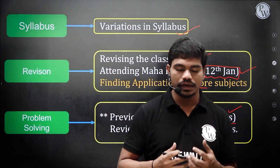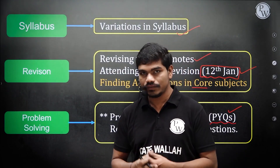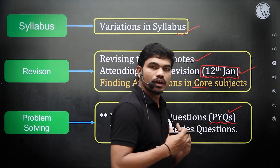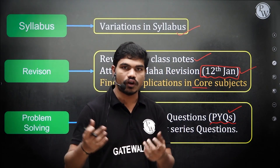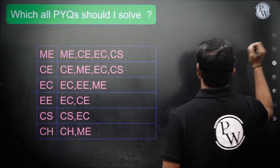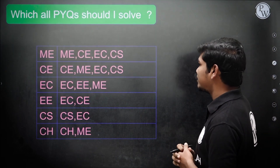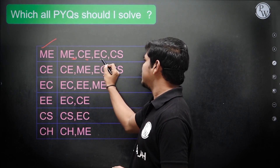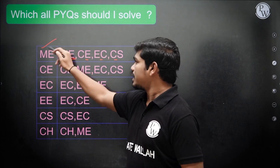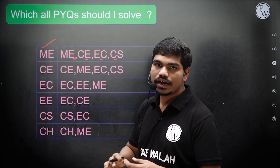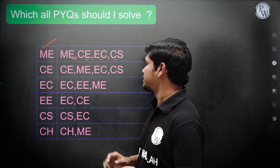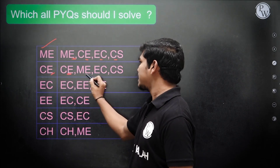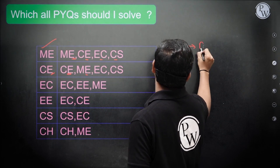There's a common question: since maths is common across branches, which PYQs should you solve? I have solved 500+ PYQs while forming the PYQ books, so here are my suggestions. If you are from mechanical, solve PYQs from mechanical, civil, EC, and computer science — the mechanical syllabus is vast and covers questions from all other branches. For civil engineering, solve civil and mechanical questions. Civil does not include complex numbers or complex calculus.